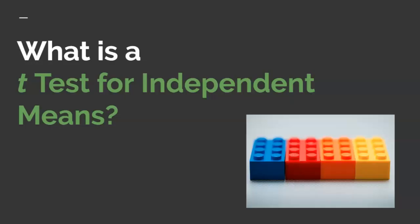A t-test allows researchers to conduct a hypothesis test when population variance, or sigma squared, is not known. There are three different types of t-tests. The third type is known as the t-test for independent means. In its simplest form, there are two separate samples being compared. Examples include comparing men and women, and control groups versus treatment groups.